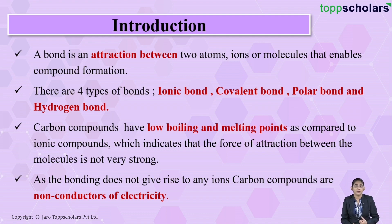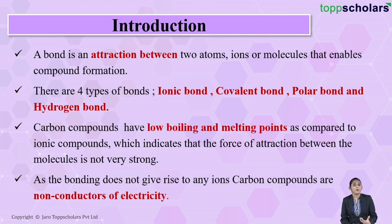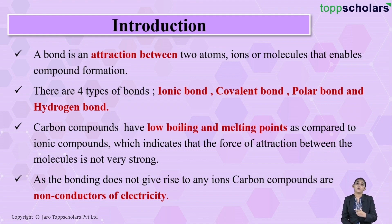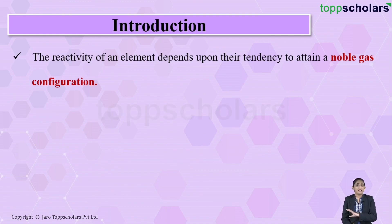That is why carbon compounds are non-conductors of electricity. For conduction of electricity you need a large number of ions in solution. Ionic compounds are good conductors because when dissolved in water they dissociate to give a large number of ions, and these ions are responsible for conduction. Since carbon compounds contain covalent bonds that do not give rise to any ions, there is no conduction of electricity.